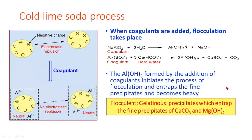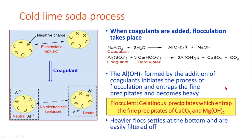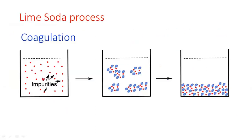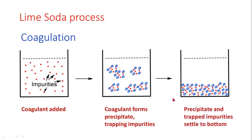We add the coagulants, which interact with fine precipitates of calcium carbonate and magnesium hydroxide. The heavier flocs settle to the bottom. If you look at the impurities shown in red, we add coagulant particles. After joining together, they settle as precipitate down to the bottom of the container.